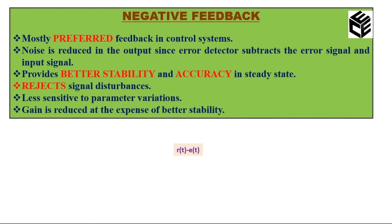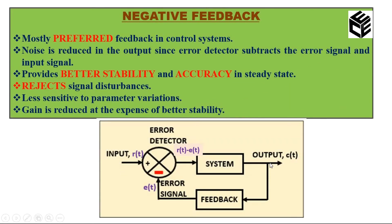Now let's see what is negative feedback. Here, a part of the output is fed back to the input as an error signal, and in the summer we apply a negative sign instead of a positive sign. So the output of the summer is r(t) minus e(t). The error signal is reduced or removed from the input signal so that we get the correct output. We use negative feedback in order to get better stability and to improve the accuracy of the system. Negative feedback is mostly preferred in control systems because it improves accuracy, stability, and rejects signal disturbances.